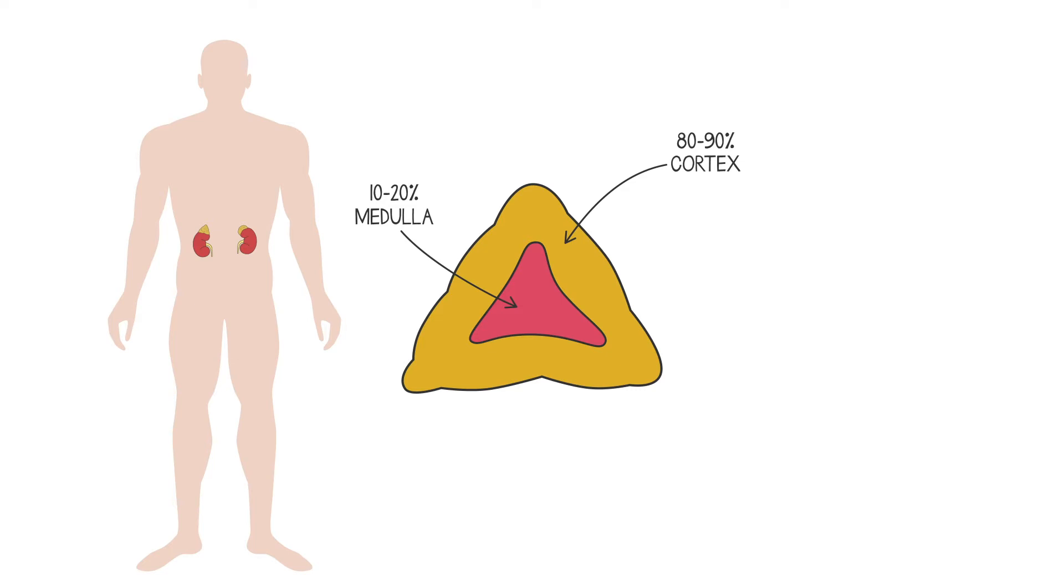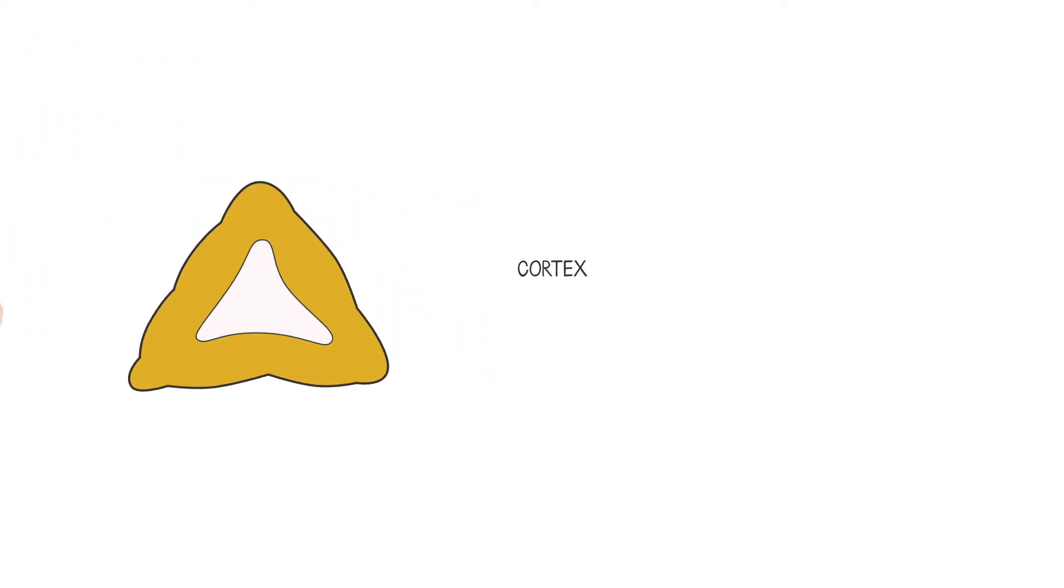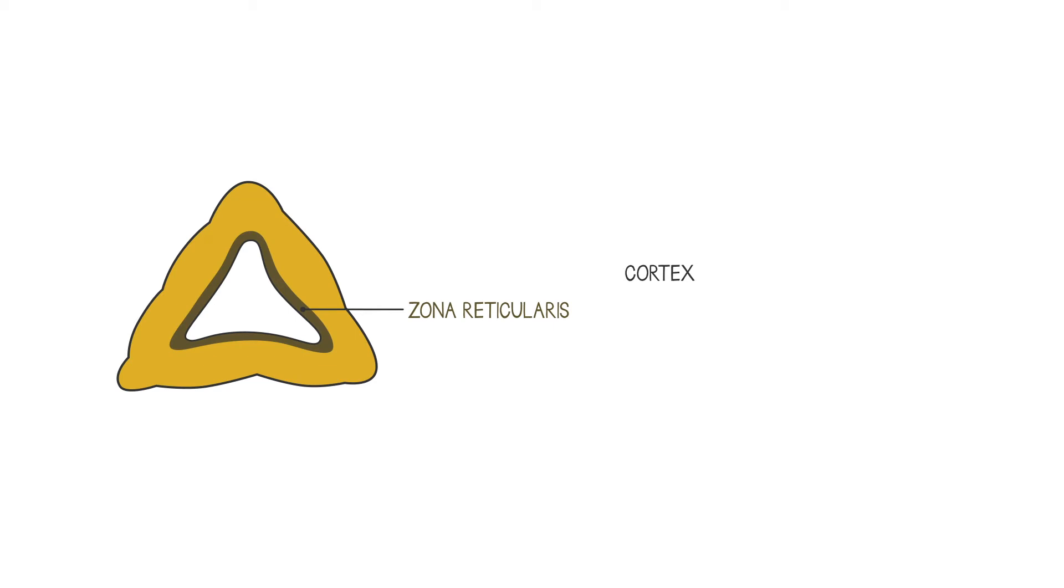These two parts produce different families of hormones with different functions. There are three subdivisions to the adrenal cortex. The inner part is the zona reticularis, the middle zone is the zona fasciculata, and the outer zone is the zona glomerulosa.